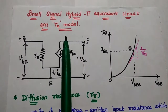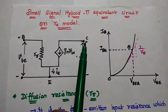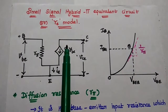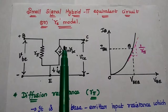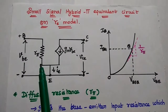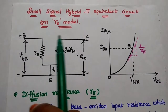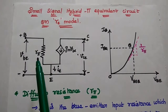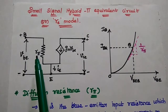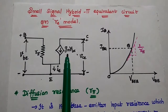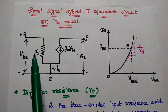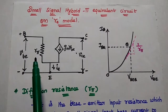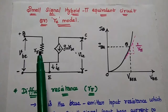Next is the small signal hybrid pi equivalent circuit, also called the RE model. This method is widely used for analyzing small signal amplifier circuits. In this method, the transistor is replaced with its equivalent hybrid pi circuit with two important parameters: R_pi and G_m. R_pi represents the base-emitter input resistance, also called diffusion resistance.